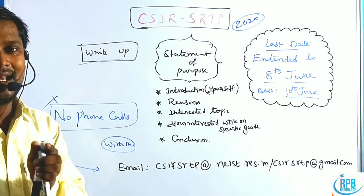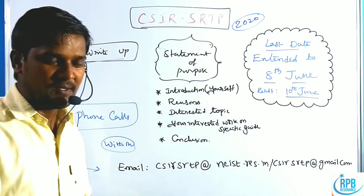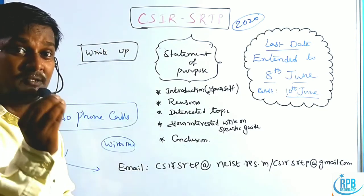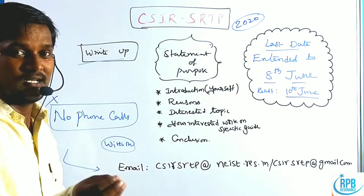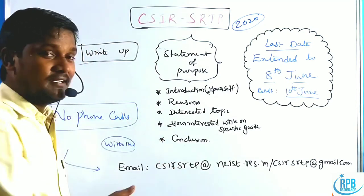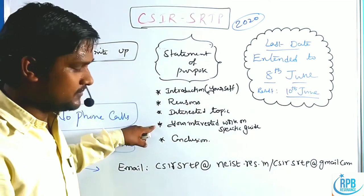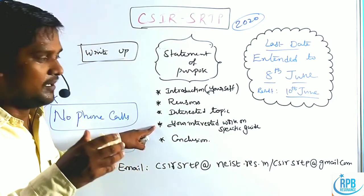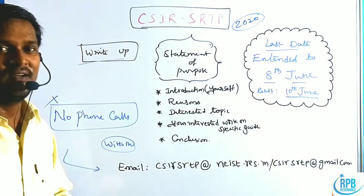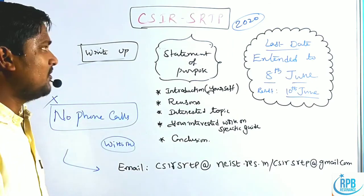The fourth paragraph: if you have selected a guide from one of the CSIR laboratories, go through some of the publications of that particular guide and mention your guide's recent publication topic. This has a very strong impact on your application. The fifth paragraph is a conclusion — summarize all the previous points.